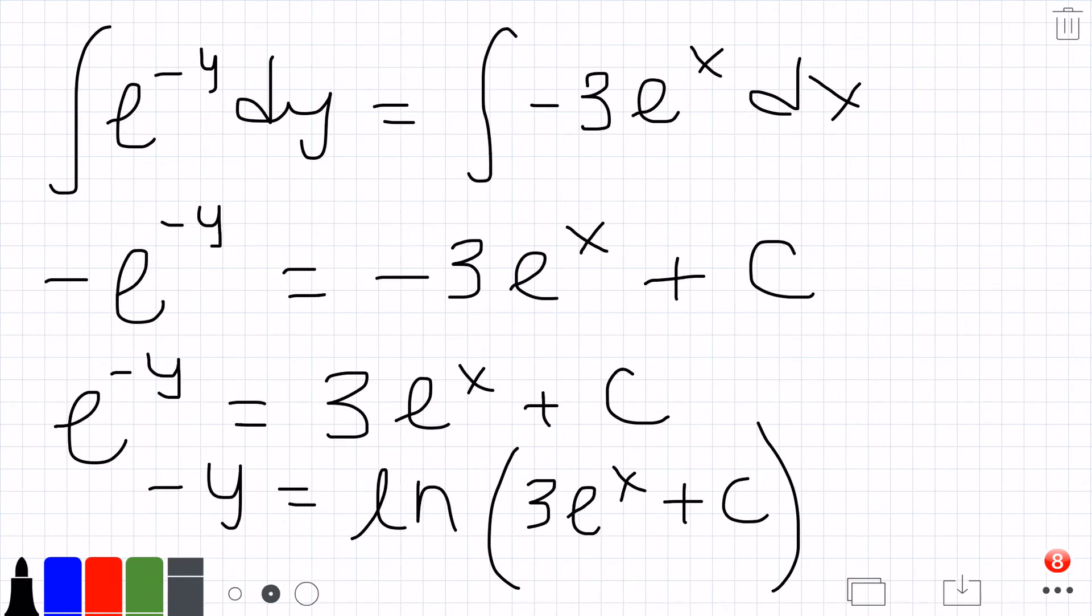And divide a negative through, left with a positive there and a negative there. You have to remember to keep the constant inside the natural log function because it goes with this whole thing.